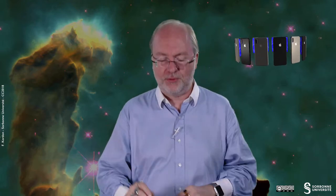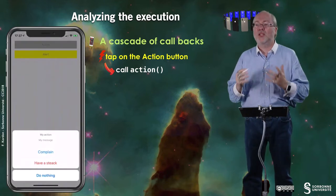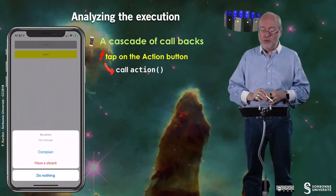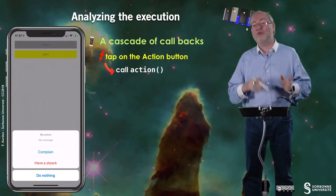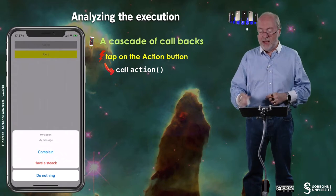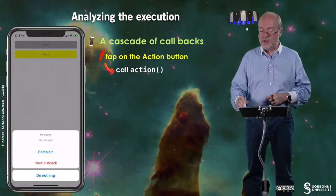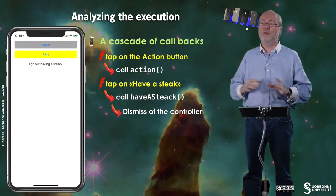Let's analyze the execution. And you will see that you really have a cascade of callbacks. So let's imagine that we tap on the action button. And then you will see that this view will appear. This is normal because you have executed action, the action method. And then if I select one element, let's imagine that I tap on have a stack. Then it will call haveAStack. And then it will generate the dismiss of the controller automatically. Everything is done automatically.